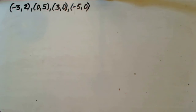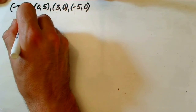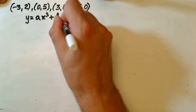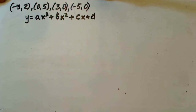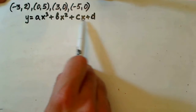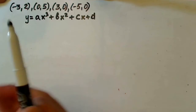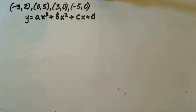We're asked to find a cubic function which passes through four points. First of all, what is our general form for the cubic function? Y equals ax cubed plus bx squared plus cx plus d. Now I'm going to plug in these points into our basic equation, and we're going to have four equations which we'll solve as a system of equations to find the values of a, b, c, and d.